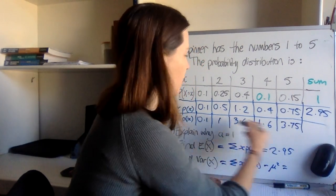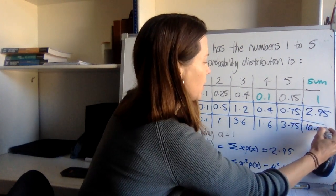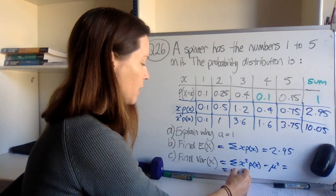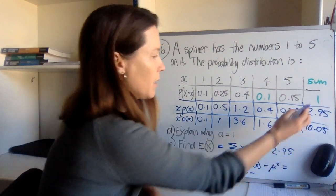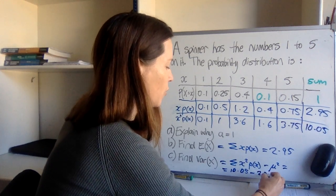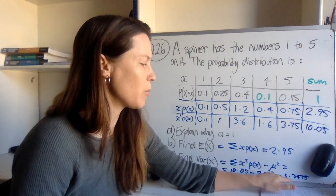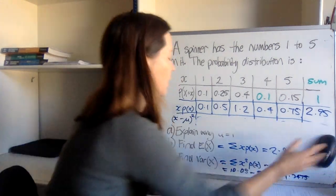And then when you add all of these up, you get 10.05. So at the end, you need to say, well, that's 10.05 minus mu squared, which is 2.95 squared. And when you put all that in your calculator, you get 1.3475.